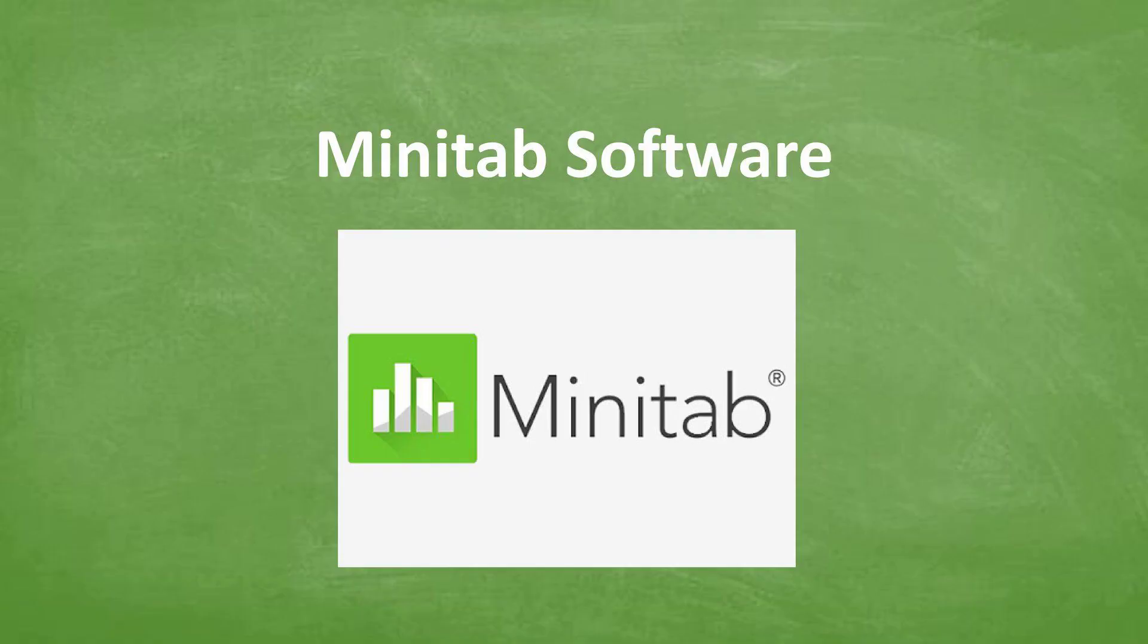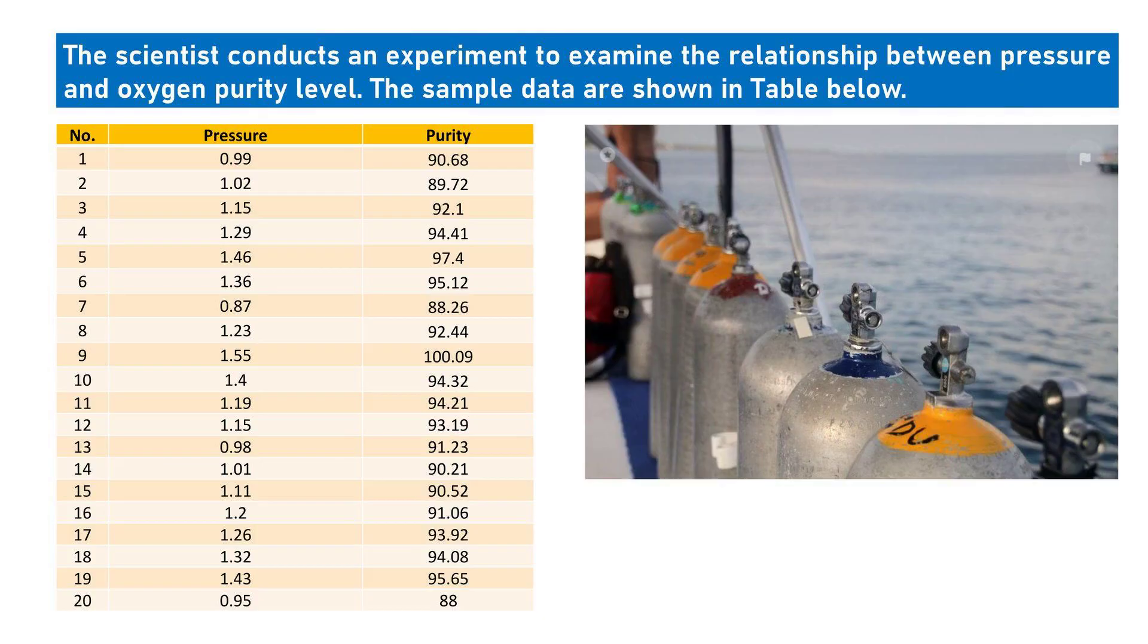Minitab is a powerful software tool that helps in statistical analysis for simple linear regression. The scientist conducts an experiment to examine the relationship between pressure and oxygen purity level. The sample data are shown in table below.